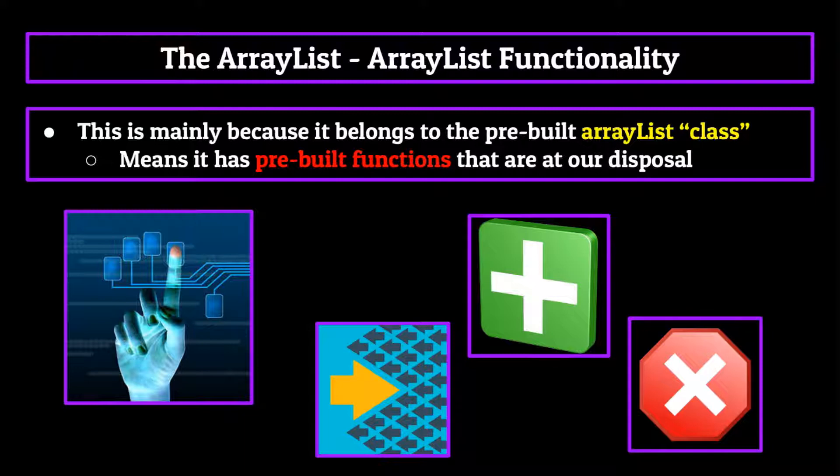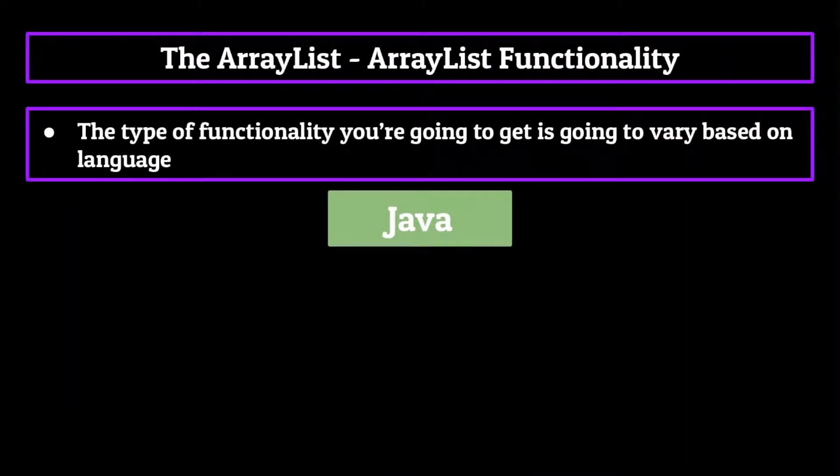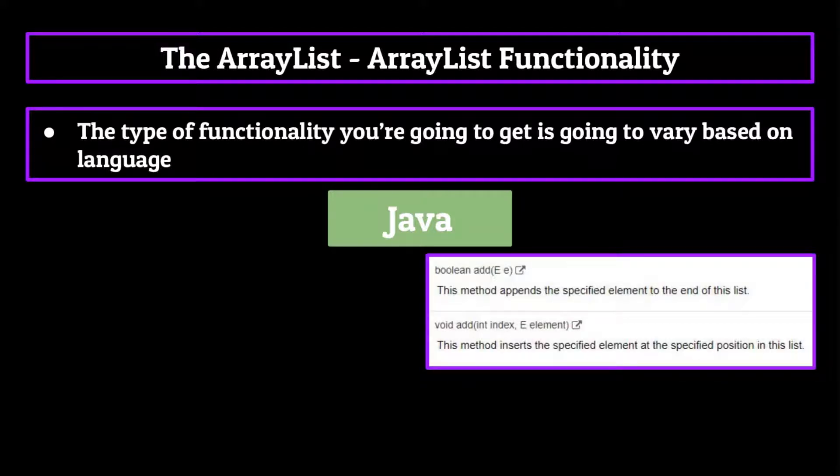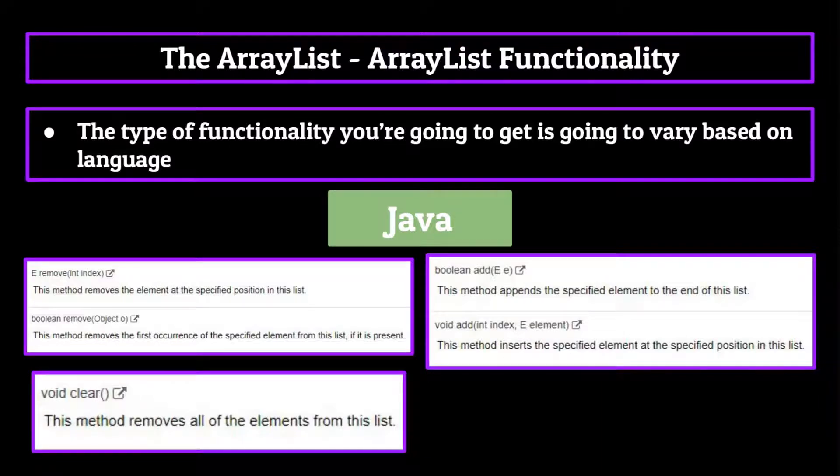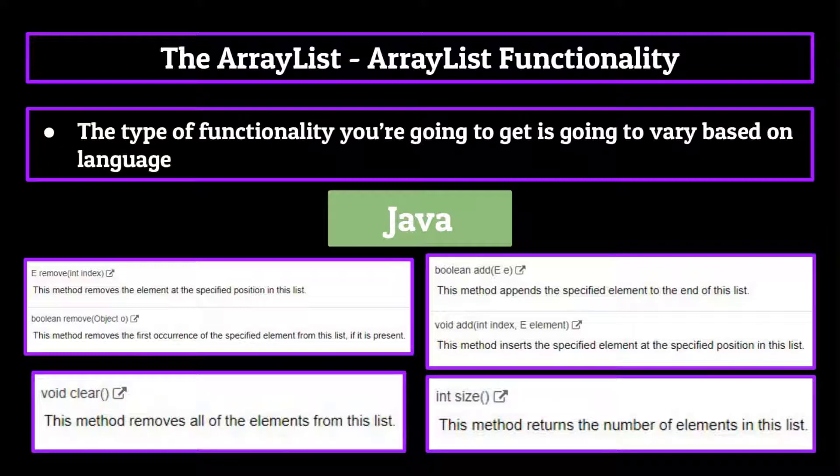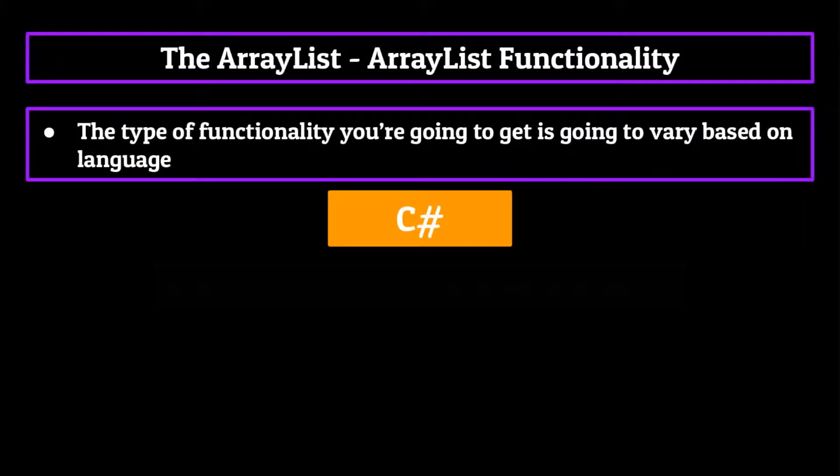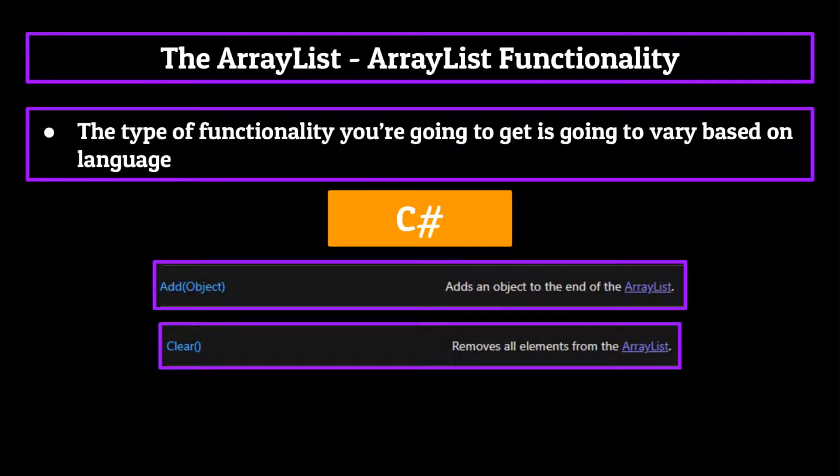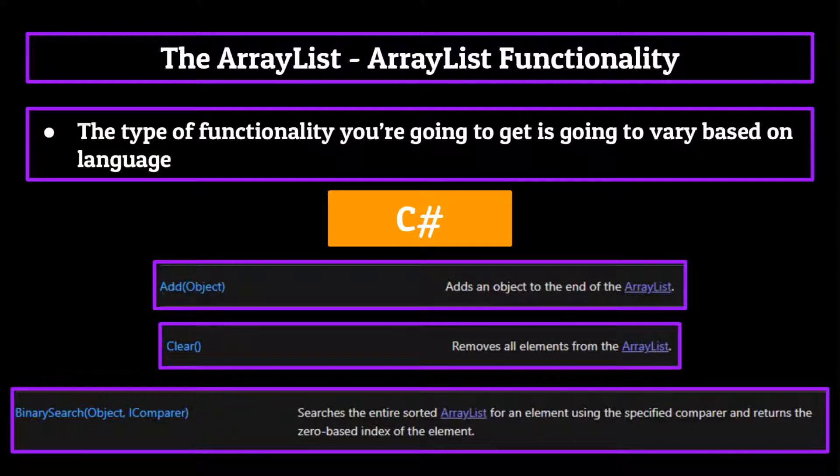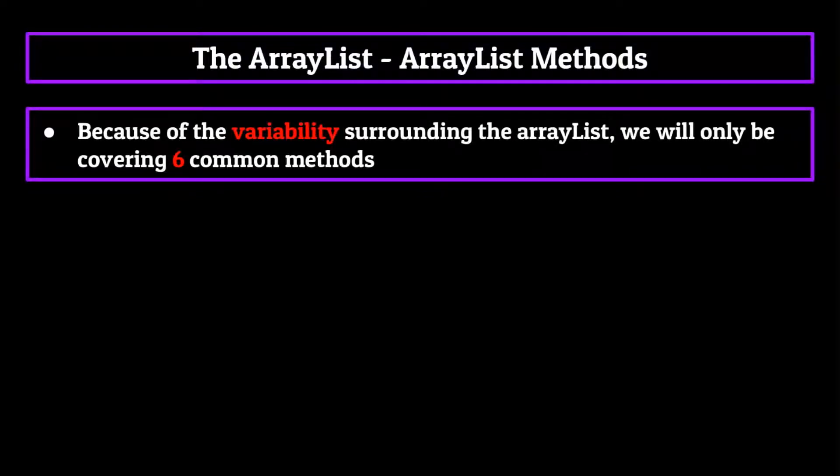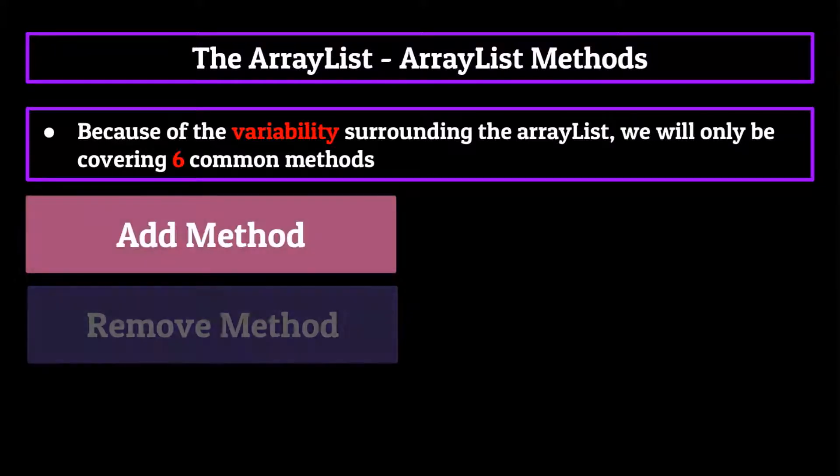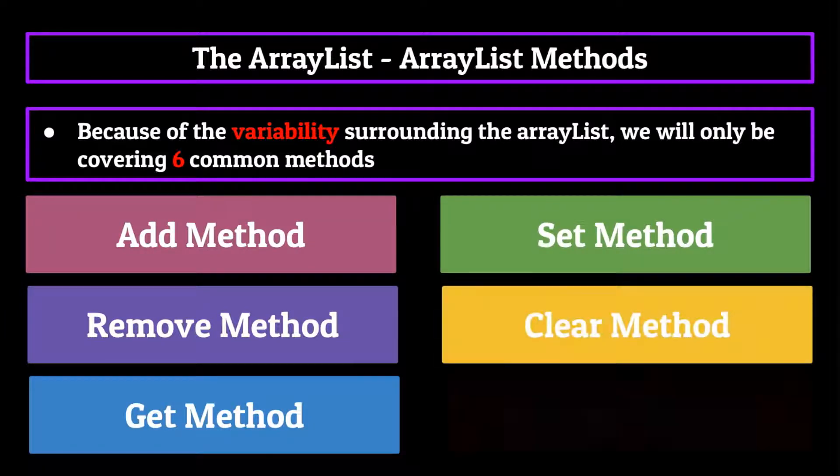Now the type of functionality you're going to get again is going to vary based on language. For example, in Java, you'll have a variety of methods to use, including ones to add elements to the ArrayList, remove them, clear the ArrayList entirely, return the size of the data structure, etc., as well as tons of other more specific functions. In C sharp, you'll have some of the same methods as the Java ArrayList class, but you might also have some methods the Java version does not, and vice versa. Because of the variability surrounding the ArrayList amongst languages, in this series, at least, we're simply going to be covering six common methods that are both useful and can be found in most if not all versions of the ArrayList class. Those being the add method, the remove method, the get and set methods, the clear method, and the to array method.